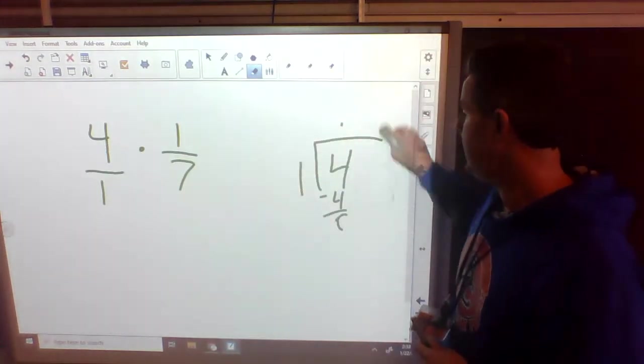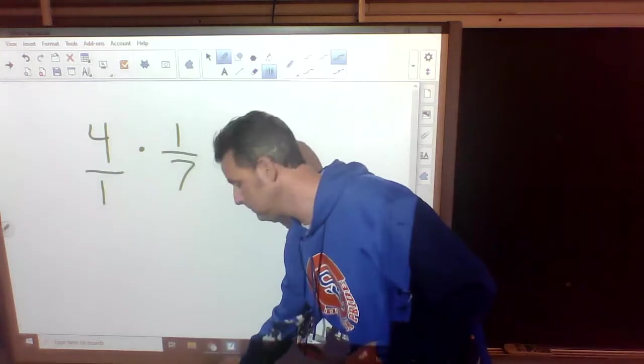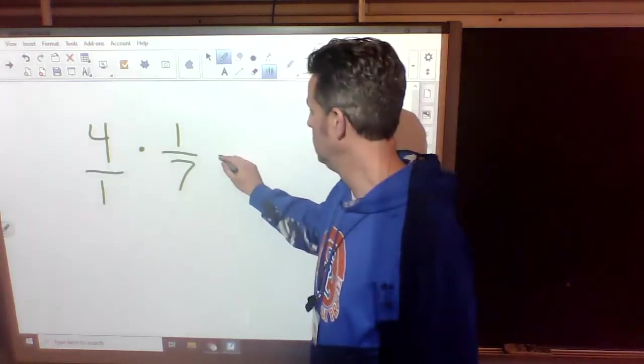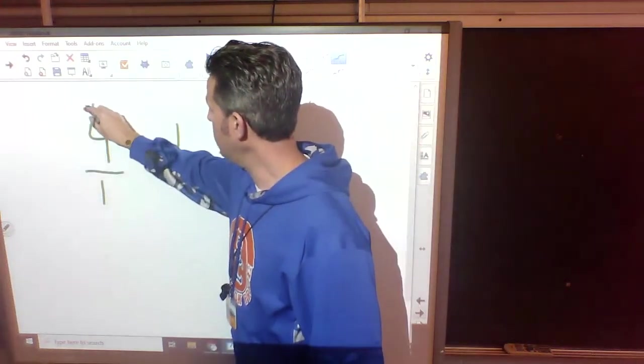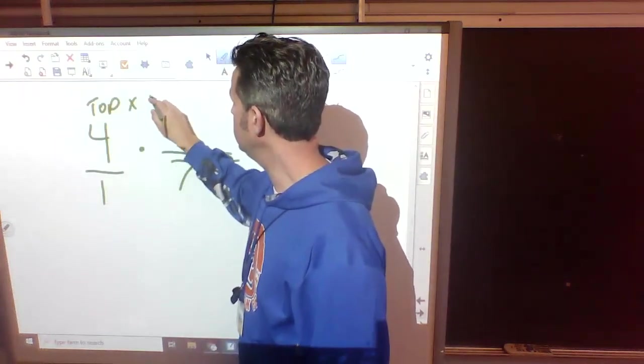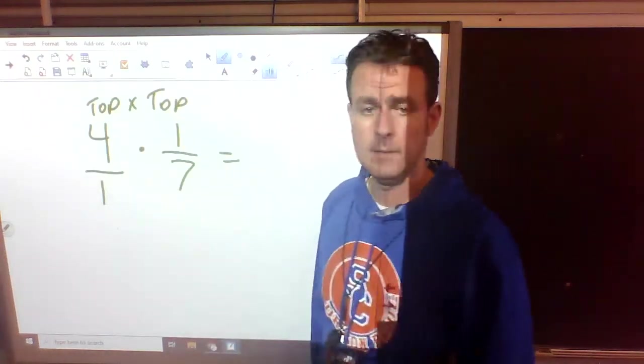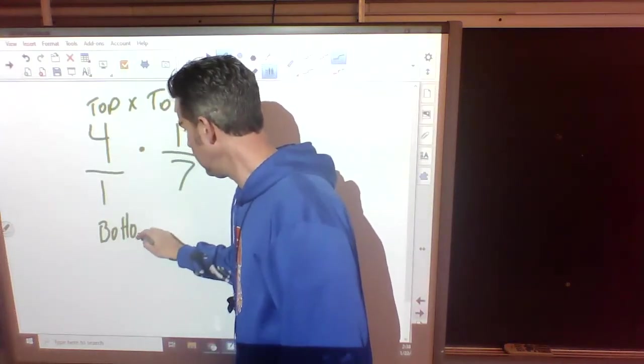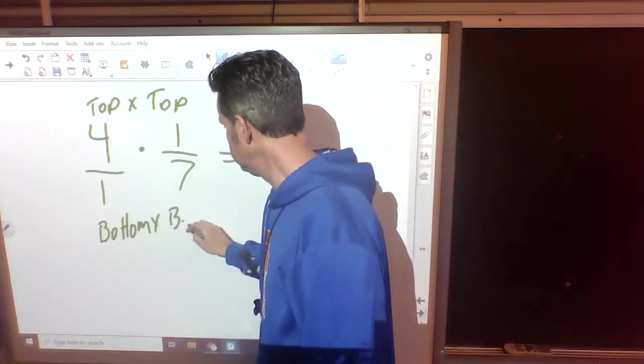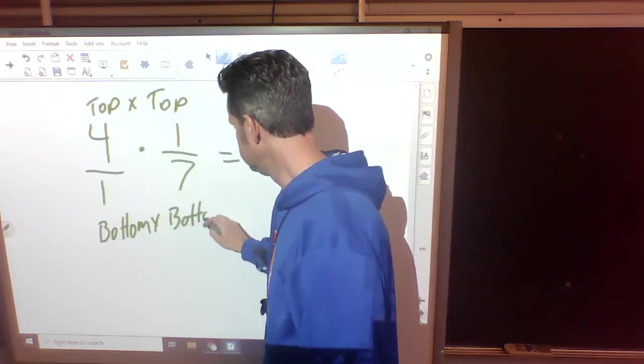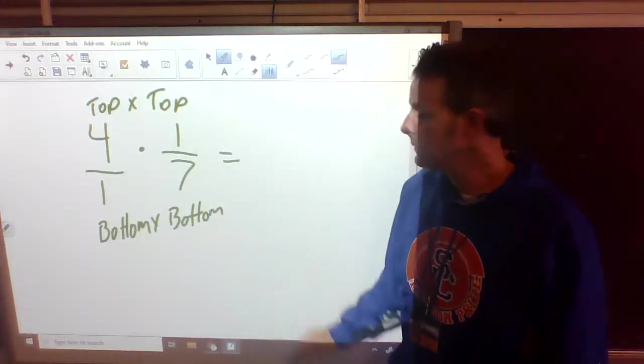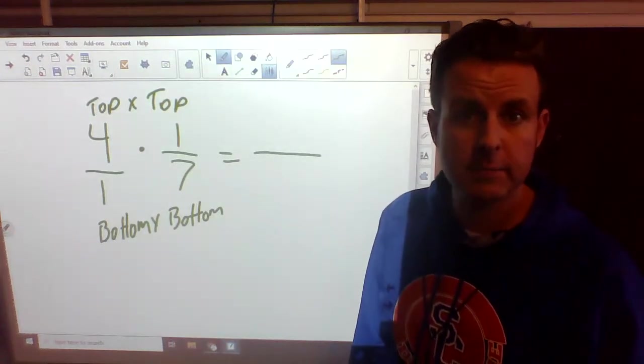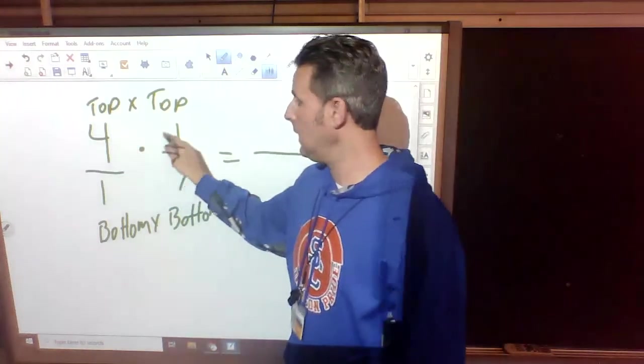Now, when you have two fractions, this is how you multiply. Are you ready? You take the top times the top. Then you take the bottom times the bottom. That's it. So we're going to put our fraction line here. When we multiply it, the top times the top. What's 4 times 1?